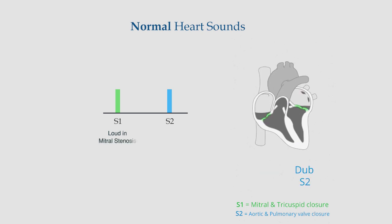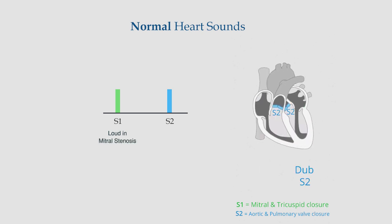The intensity of S1 is increased in mitral stenosis, due to the closure of the valve against elevated left atrial pressure. The loud S1 can be appreciated as long as the stenosed valves are pliable. It becomes soft when the stenosed valves calcify.